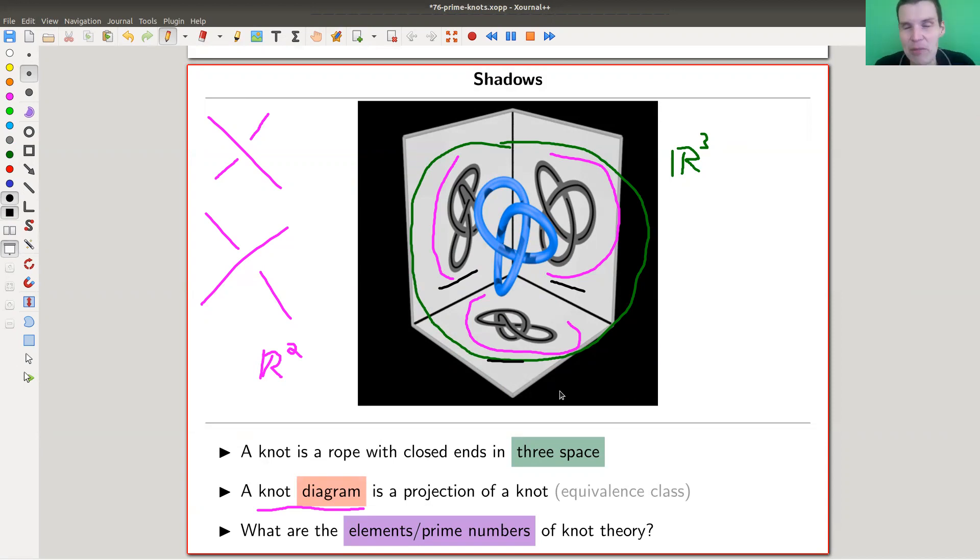And a standard question somehow you should always ask is what are the elements, if you like chemistry, or what are the prime numbers, if you more like number theory of knot theory. So what are the basic building blocks of knot theory or any kind of theory you want? Very often, it doesn't have a really satisfying answer. Prime numbers are pretty cool. It has a pretty nice answer to the question. What are the prime numbers of number theory? They are prime numbers. Well, what are the elements of number theory? Of course, they are prime numbers. A very satisfying answer. And in knot theory, actually, there's also a very satisfying answer. And that's the theorem for today. But let's go there very slowly.